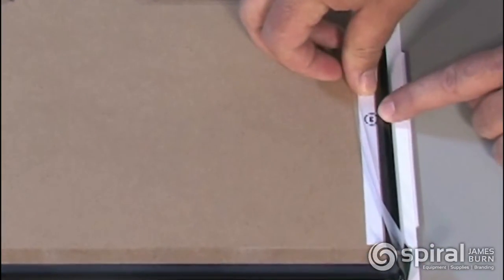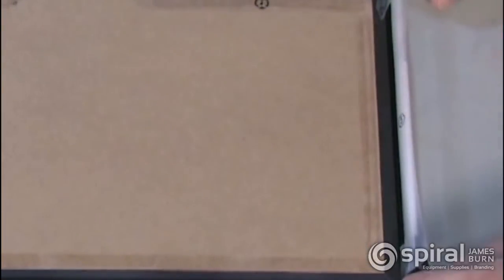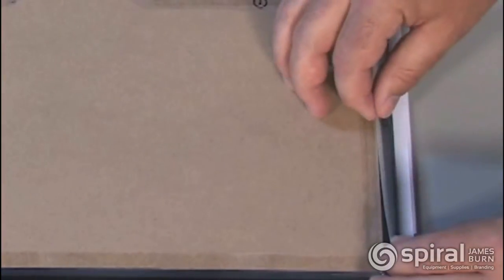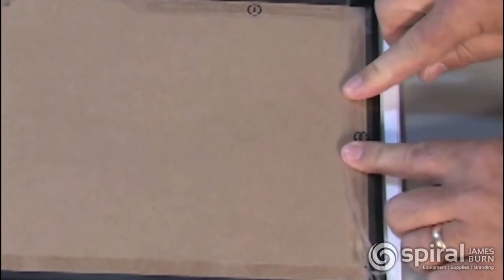Peel off the white strip next to flap three. Fold in the two corner flaps labeled two along the dashed lines, then press flap three down into the adhesive strip, working from the center outwards to fully adhere the flap.